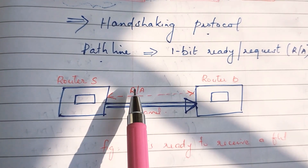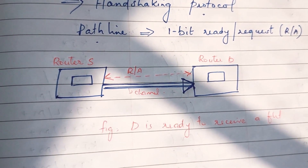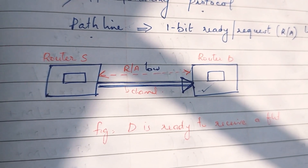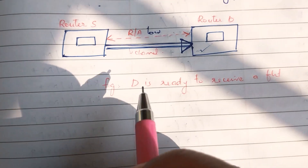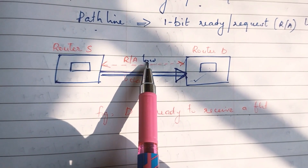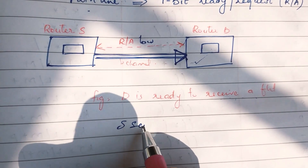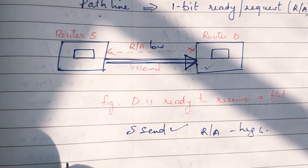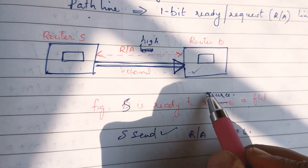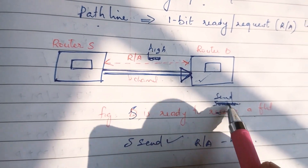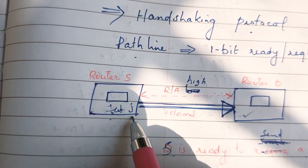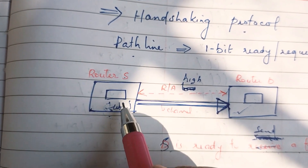That is the R-bar-A signal. R-bar-A is used between the two adjacent routers. When the destination is ready, the path line is set. When the source is ready to send and R-bar-A is high, flit J is transmitted. When the router is ready, R-bar-A value goes high.